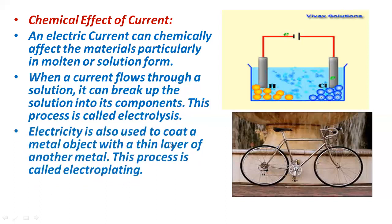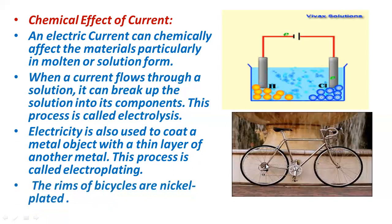Electricity is also used to coat a metal object with a thin layer of another metal. This process is called electroplating — making a layer of one metal on another metal. You can see in this image that the rims of a bicycle are nickel-plated. The rims are made of iron but are plated with nickel, which prevents rusting and gives a visual appeal as well.